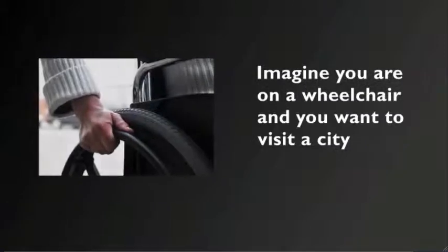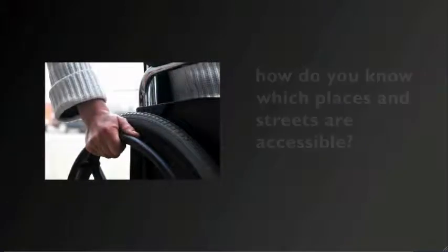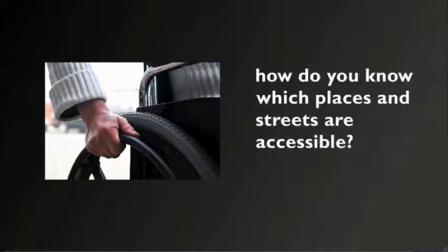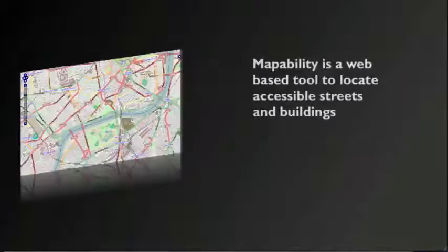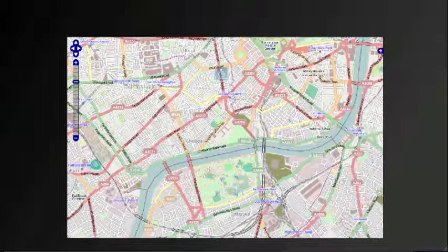Imagine you are in a wheelchair and you want to visit a city, but how do you know which places and streets are accessible? Mapability is a web-based tool to locate accessible streets and buildings. Users can mark on the map those places that are accessible and those that are not.